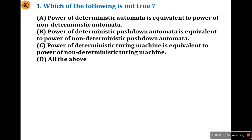The options are: first, the power of deterministic automata is equal to the power of non-deterministic automata. Second, the power of deterministic pushdown automata is equal to the power of non-deterministic pushdown automata. Third, the power of deterministic Turing machine is equal to non-deterministic Turing machine.